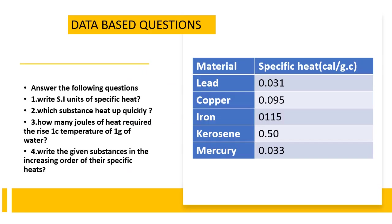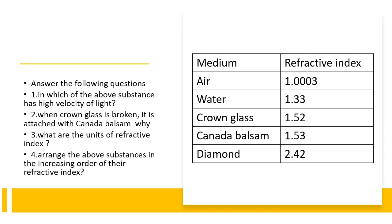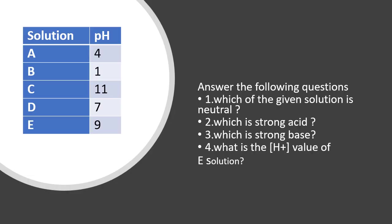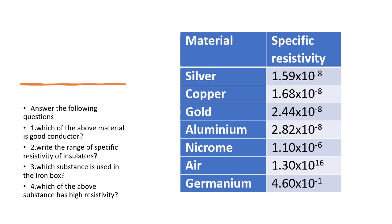Next, data-based questions. The first question is on specific heat — some materials and their specific heats are given, and you answer 4 questions, each carrying 1 mark. This is the most important question. The second one is based on the refractive index of different materials. The third one is on pH. The fourth one is based on specific resistivity — some resistivities of materials are given and 4 questions follow.